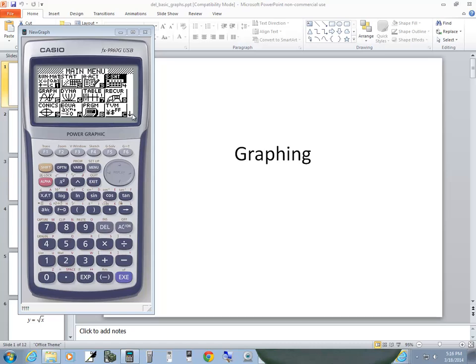Let's take a look at graphing on the Casio. Now this says it's a Bottle FX9960G, and that's what I'll actually list it under.